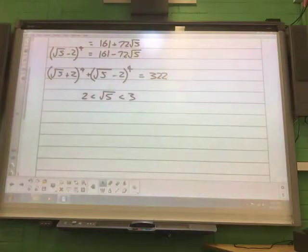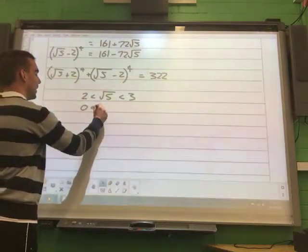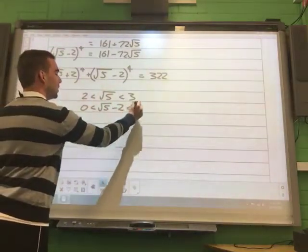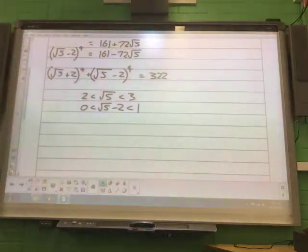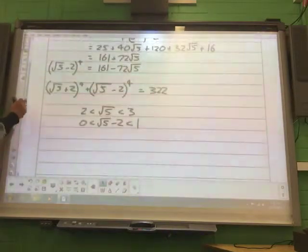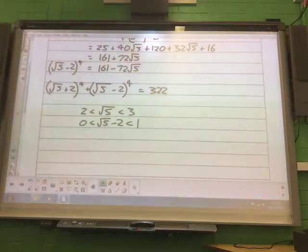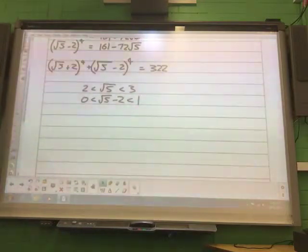Now, what I'm going to do to each of those terms, I'm going to subtract 2. So 0 is less than root 5 take away 2, which is less than 1. Because I've got this involved in my question as well.